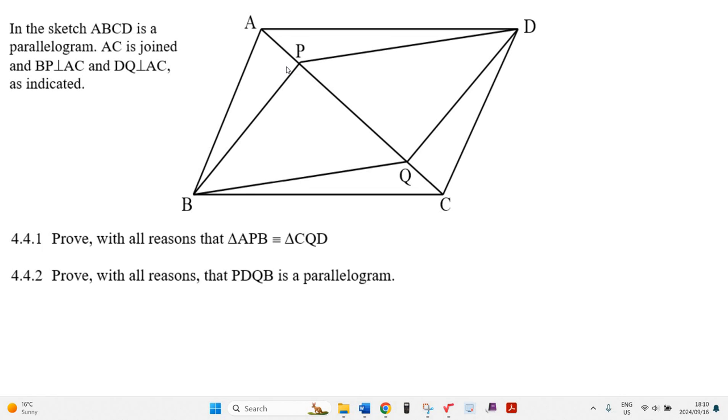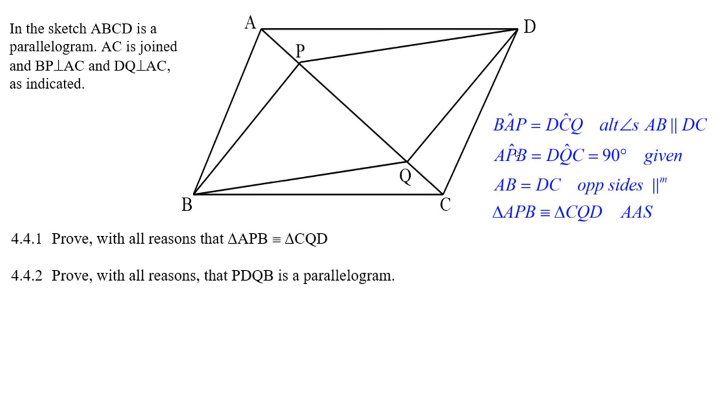Well, we're given that this is a parallelogram, that means AB is parallel to CD. Well, that's what I use first. I figure BAP, that angle there, has to equal that angle there because the alternate angles of AB being parallel to DC.